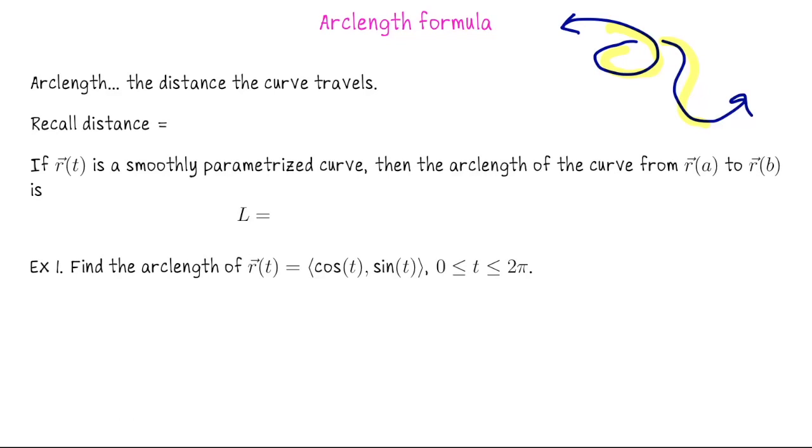To understand why this formula is what it is, I like to think of arc length as the distance that the curve travels. So in particular, if this curve is parametrized by r of t, where this point is r of a, and this point is r of b.